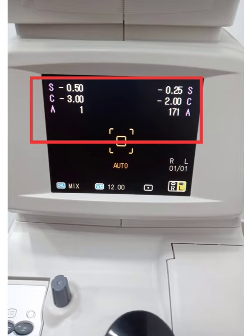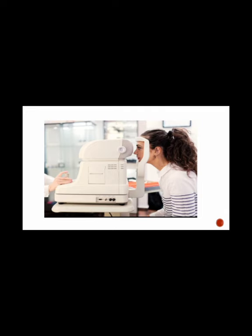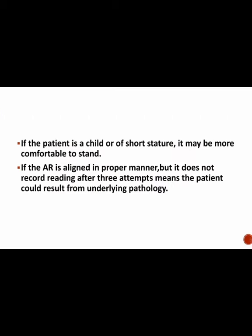This patient has both cylinder power and spherical power. If we select the print option, we get the refractive error value of the patient in objective measurement. If the patient is a child or is short, it may be more comfortable for the patient to stand and we can start the procedure.